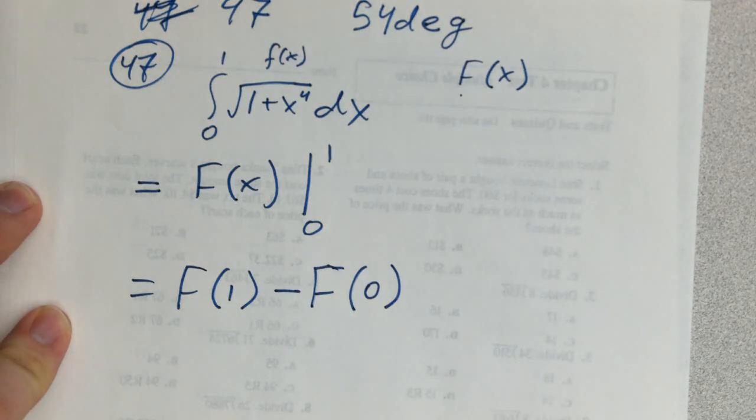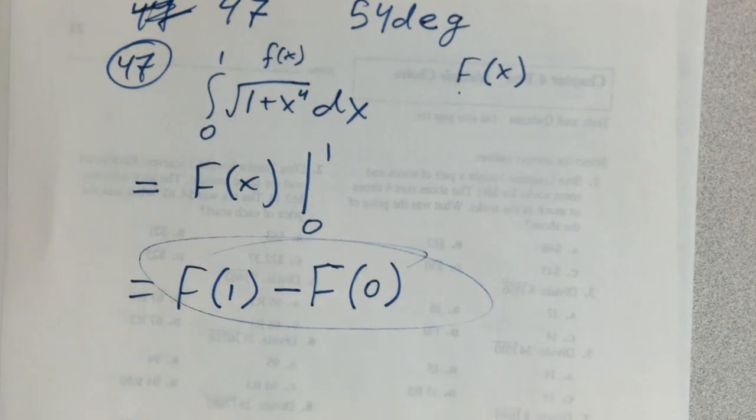So they want the answer in terms of capital F, and so you're done. That's the whole thing. So capital F represents the anti-derivative? That's right.